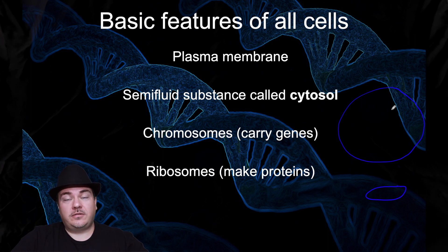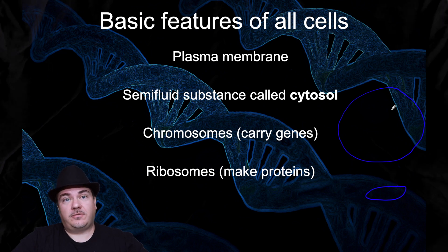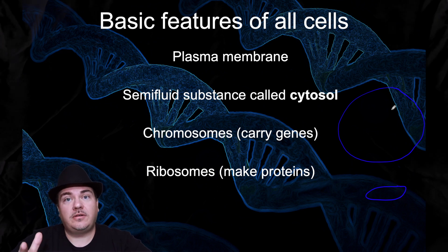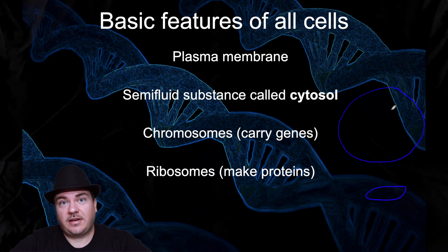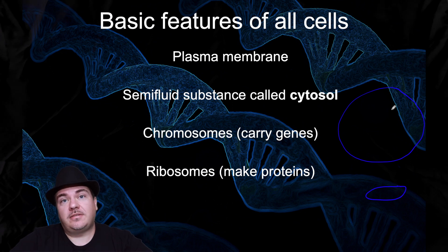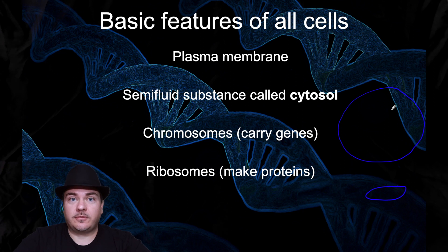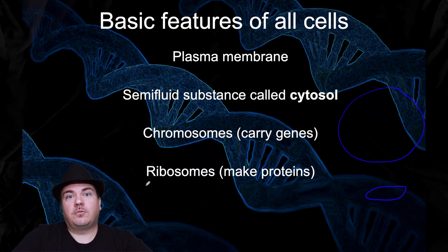All cells need to carry genetic information, so they have to have genes — DNA — to carry their genetic information. As we'll learn in more detail in a later chapter, what the DNA codes for is instructions to tell your cells how to build proteins. As a human, you have about 30,000 genes in your DNA, and that codes for the roughly 30,000 proteins that humans need. Since all cells have DNA, all cells need a way of building proteins, which means all cells need ribosomes — the workbenches where you build your proteins.